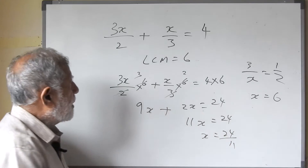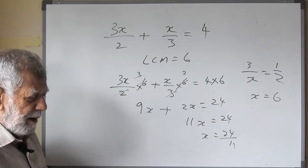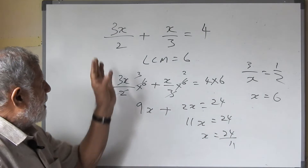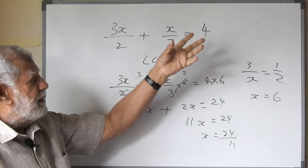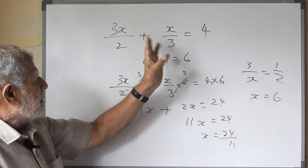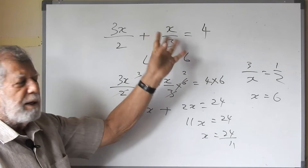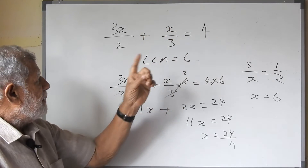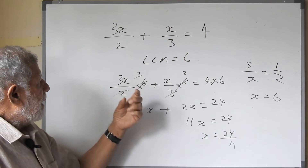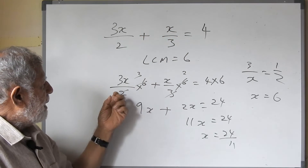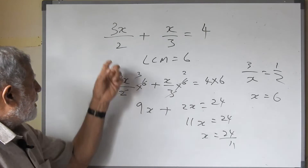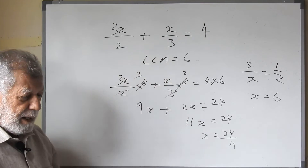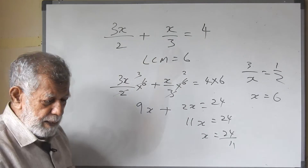So look at this carefully, children — because there are 3 terms here. When there are more than 2 terms, you must always find the LCM and multiply each and every term by the LCM. Then the denominators will get cancelled.